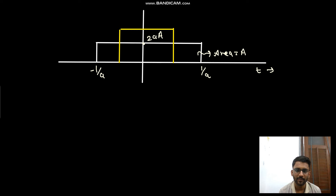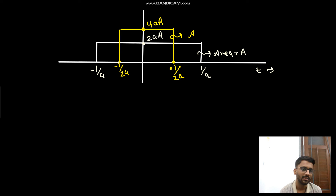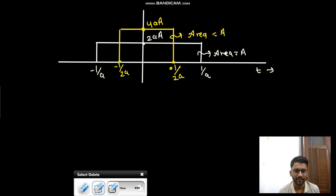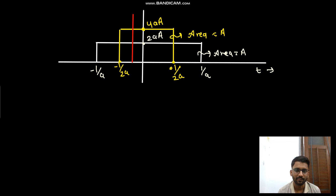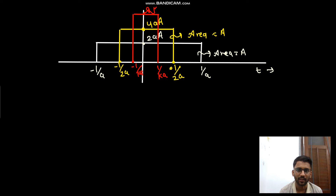After reducing, it goes from -1/(2a) to 1/(2a). We reduce the x-axis but keep the area the same, so the amplitude increases from 2a×a to 4a×a, but the area remains constant at value a. Now assume we reduce it further to some value k: from -1/(ka) to 1/(ka), making the magnitude 2ka, and the area is still a.